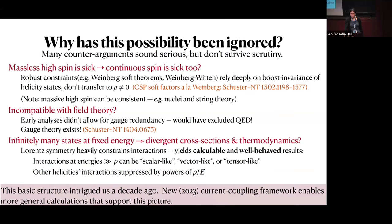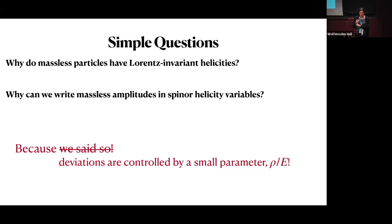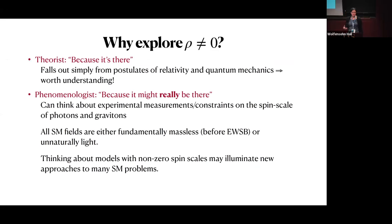That structure was first found in the soft emission amplitudes a decade ago, and has been confirmed through the current-coupling framework developed last year. This leads to a much more satisfying answer to why theories with Lorentz-invariant helicity seem to work so well to describe nature. Maybe it's not a God-given truth, and maybe it's not an abuse of authority by our elders — maybe it's because of Taylor's theorem. Deviations from the Lorentz-invariant helicity picture are controlled by the ratio ρ/E, which happens to be small in the everyday world. Maybe invariant helicity works for the same reason non-relativistic or classical mechanics work: it's all about a small parameter and a limit you recover in that regime.